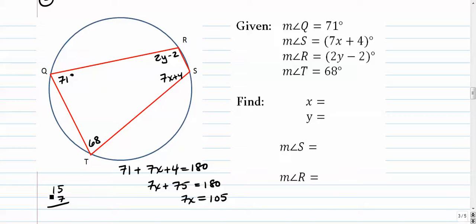What's 15 times 7? It's 70 plus 35. Yeah, so x is 15.